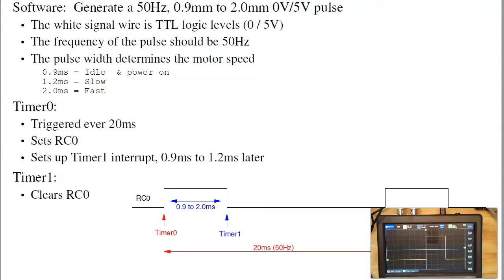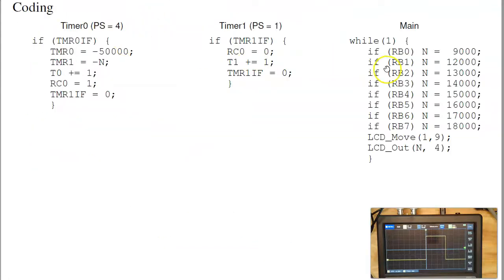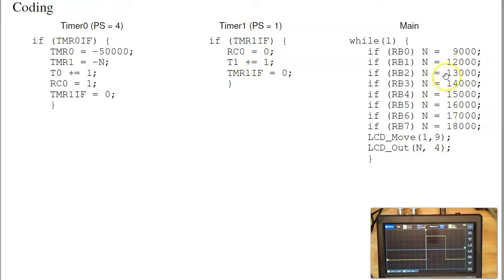The rising edge is timer 0, the falling edge is timer 1. I've got actually three routines running at the same time: the main routine, timer 0, and timer 1. Timer 0 has a prescaler of 4, so every 4 times 50,000 — 200,000 clocks or 20 milliseconds later — timer 0 kicks in. When it kicks in, it turns on RC0 and sets up timer 1 for N clocks in the future. Timer 1 then clears RC0. The main routine sets pulse widths from 0.9 milliseconds up to 1.8 milliseconds, and that's what you see on the oscilloscope.